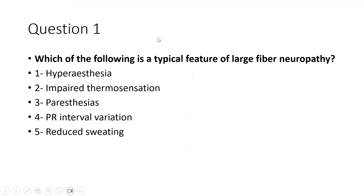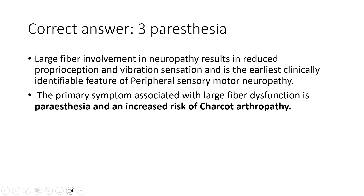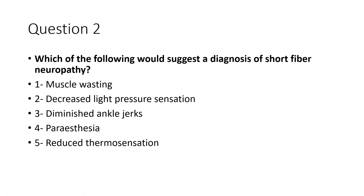Question one: which of the following is a typical feature of large fiber neuropathy? Options include hyperesthesia, impaired thermosensation, paresthesias, PR interval prolongation, or reduced sweating. The correct answer is paresthesia. Large fiber involvement results in reduced proprioception and vibration sensation, and is the earliest clinically identified feature of peripheral sensory motor neuropathy. The primary symptom of large fiber dysfunction is paresthesia, and there is an increased risk of developing Charcot arthropathy.